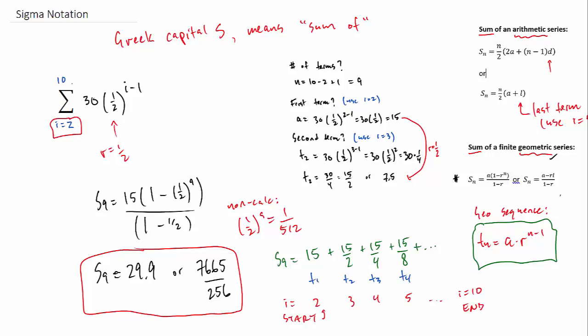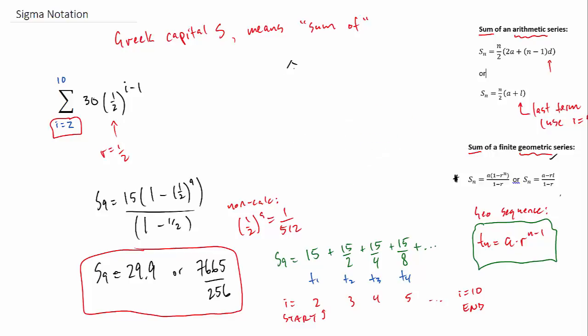And again, we can see how the index numbers work with the term numbers. And we know we're ending when we get to i equals 10. Started it at i equals 2.